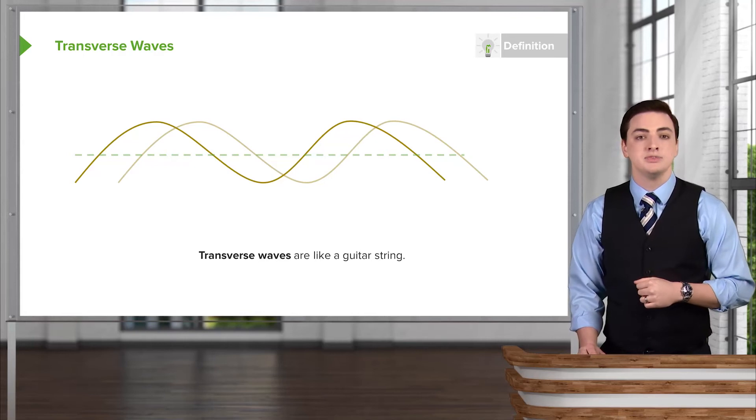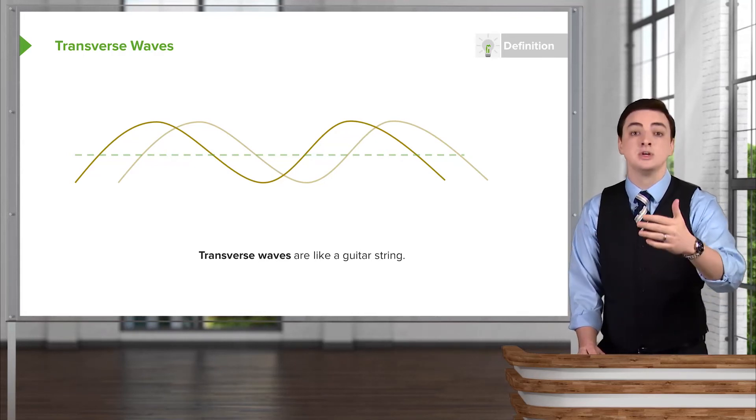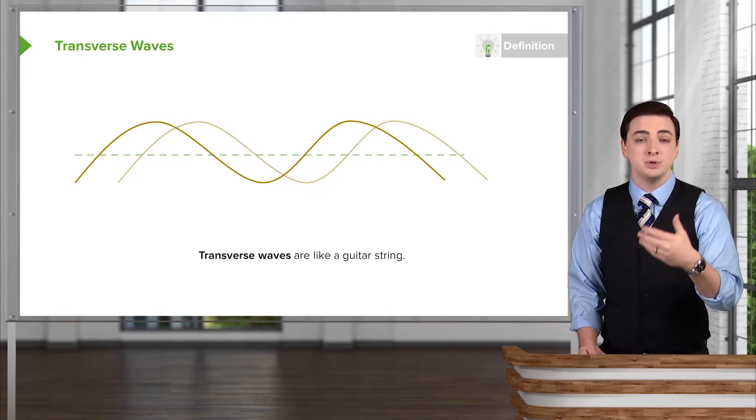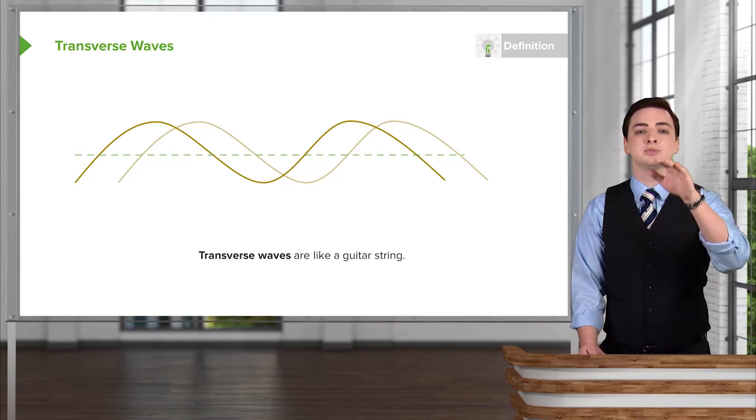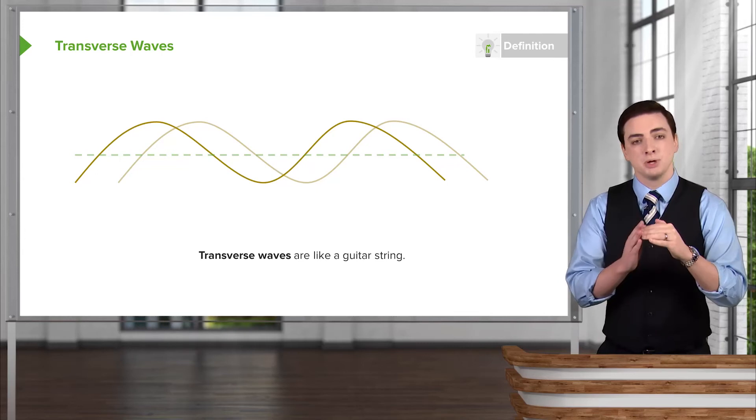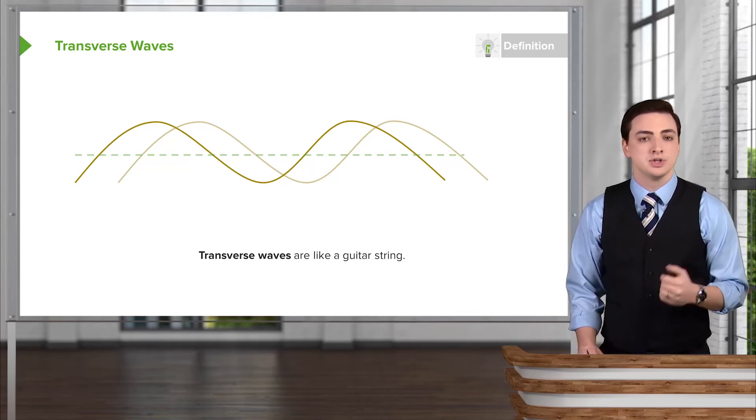And ocean waves would be a good example of this as well. You see the wave itself is moving from right to left or from out towards into the shore, whereas any point on that wave, if you had maybe a buoy or a boat out in the water, you would see it just moving up and down. And so the direction of the motion of any point on the wave is perpendicular to the motion of the wave itself. So we call these transverse waves.